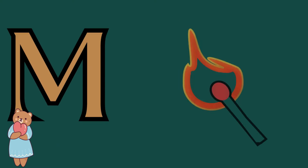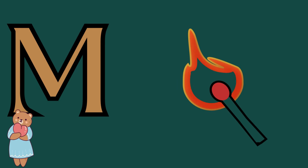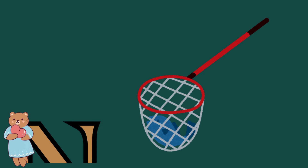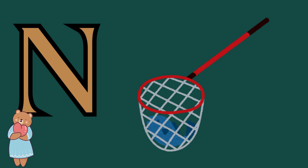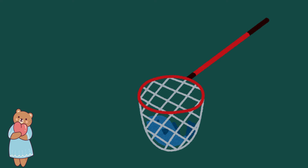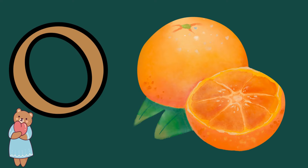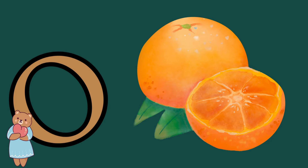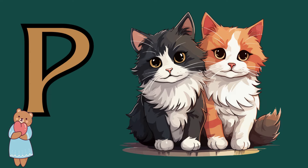M is for mat, m-m-mat. N is for net, n-n-net. O is for orange, o-o-orange. P is for pet, p-p-pet.